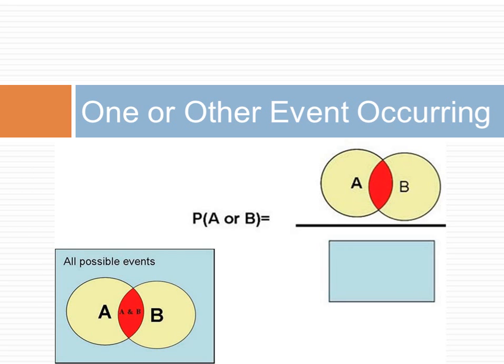The probability of either of two events, A and B occurring, is calculated by first summing all the possible ways in which event A will occur, plus all the ways in which event B will occur, minus all the possible ways in which both event A and B will occur. We have to subtract the intersection of the two events because it is double counted — once in event A and another time in event B.